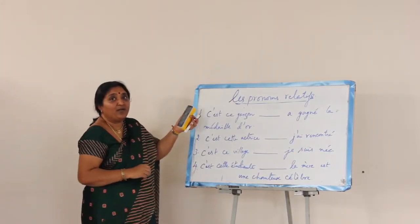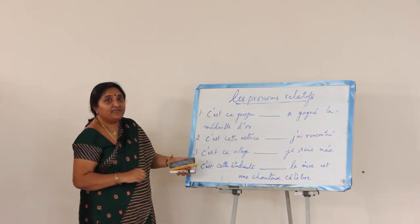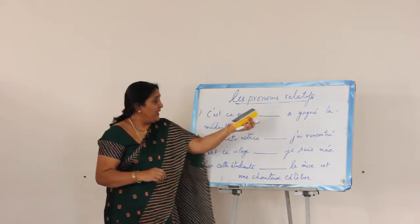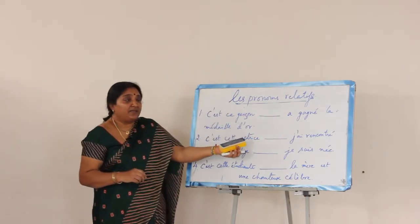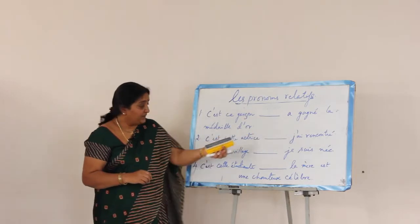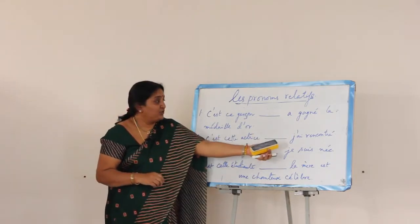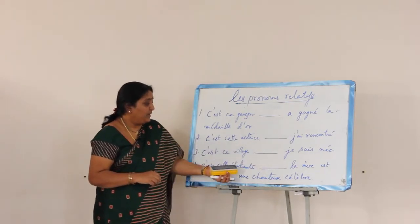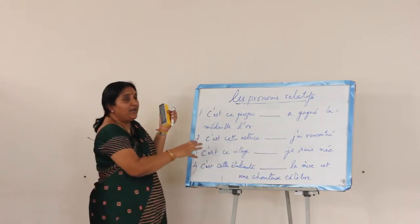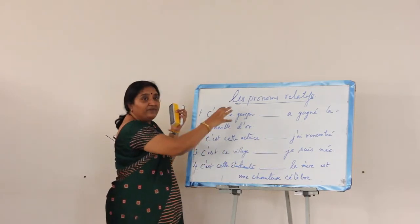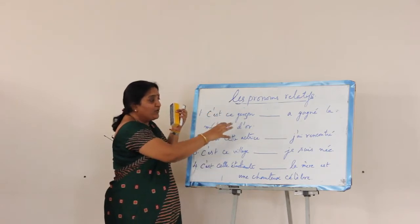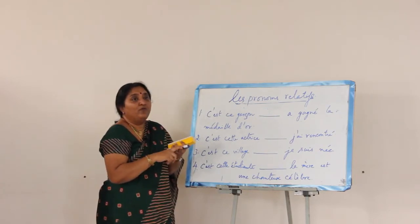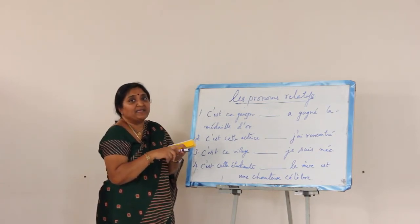Now let us see if you have understood. I have given four sentences with blanks: c'est ce garçon ___ a gagné la médaille d'or; c'est cette actrice ___ j'ai rencontré; c'est ce village ___ je suis née; c'est cette étudiante ___ la mère est une chanteuse célèbre. Apply the rule you just learnt and fill in the blanks with qui, que, où, or dont. Qui is for sujet, que is for direct object, où is for place, and dont is for possession.